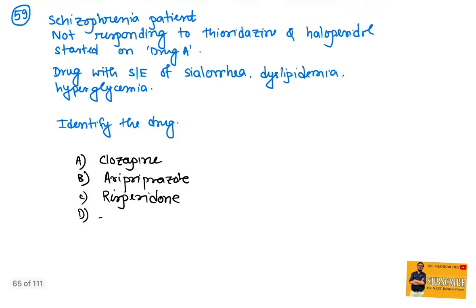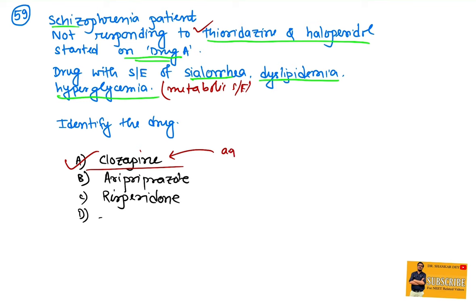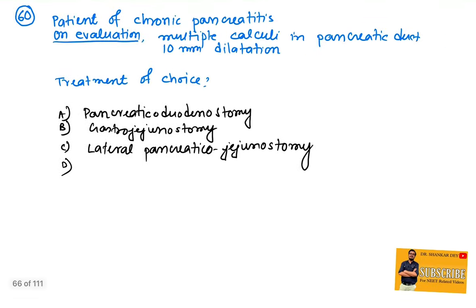Coming to question number 59: schizophrenia patient not responding to thioridazine or haloperidol started on drug A. The patient was resistant to typical antipsychotics and started on an atypical antipsychotic drug with side effects of sialorrhea, dyslipidemia, and hyperglycemia. Which drug can cause such metabolic symptoms? That is clozapine. Another important side effect of clozapine is agranulocytosis. So you have to check CBC on a regular basis to check the number of total WBC or neutrophils.